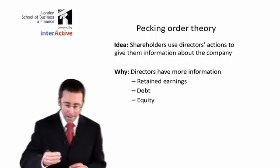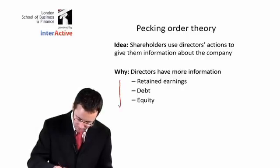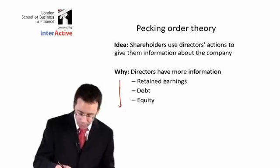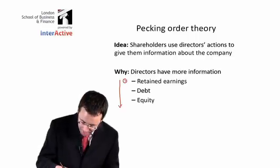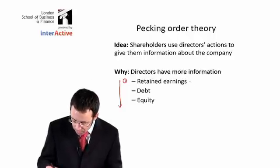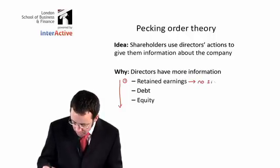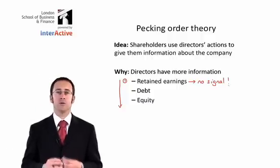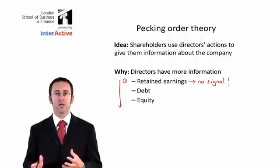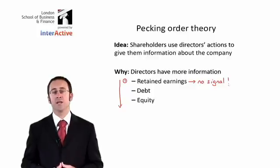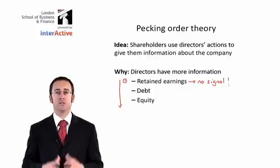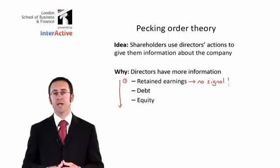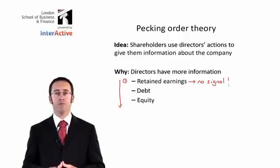If we think about what the pecking order actually is, a director will use retained earnings first. Why? Because the use of retained earnings gives no signal at all to the shareholders. All the directors are doing is using their internal funds to finance internal projects, so the shareholders won't buy or sell any particular number of their shares.